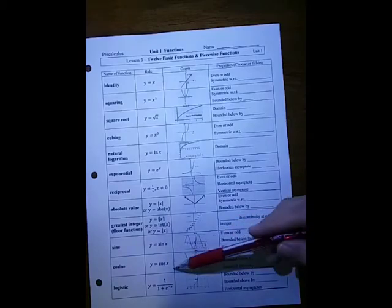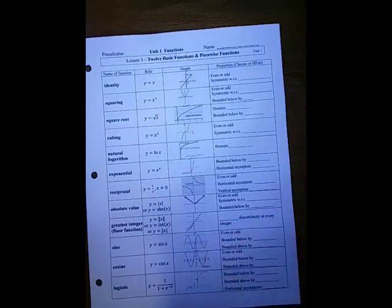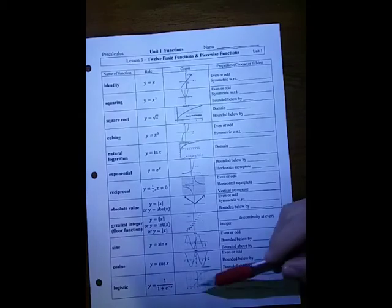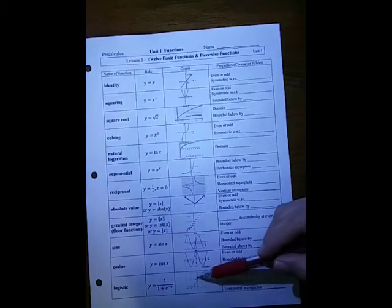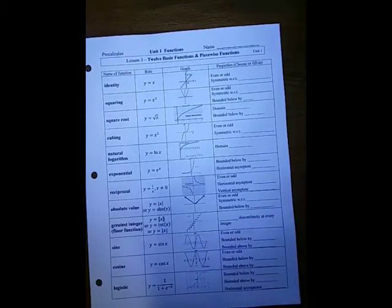The cosine — is it an even or an odd function? What's it bounded by above and below? By the way, it ranges between minus 1 and 1.